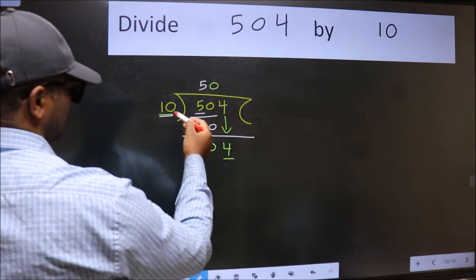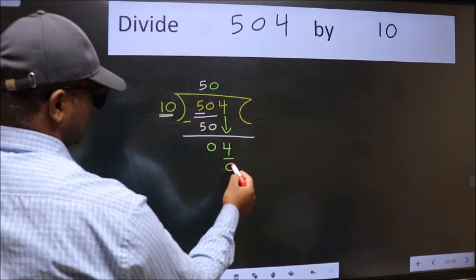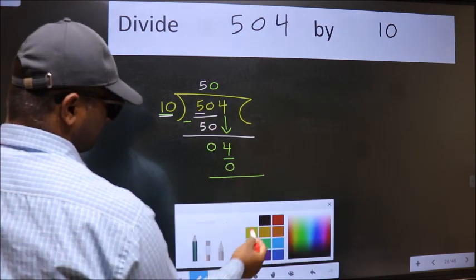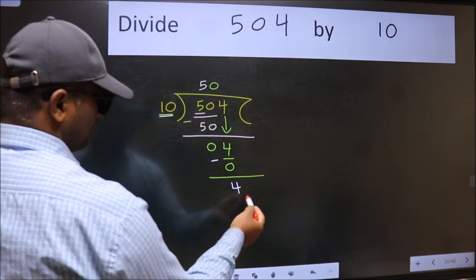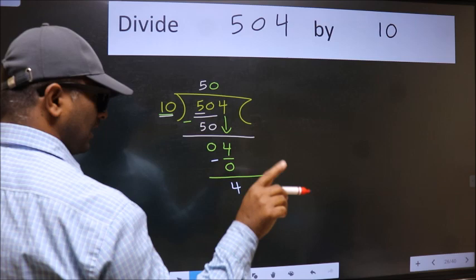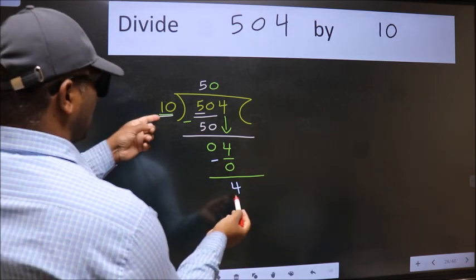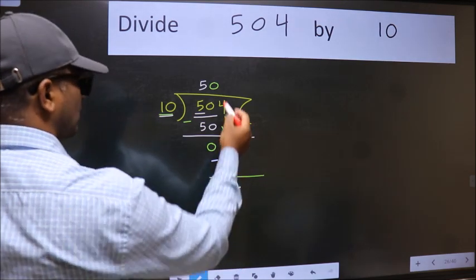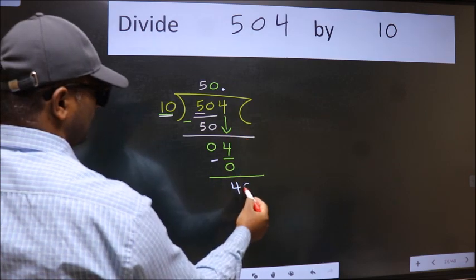So 10 into 0. Now we subtract, we get 4. Over here, we did not bring any number down, and 4 is smaller than 10. So now we can put dot and take 0.